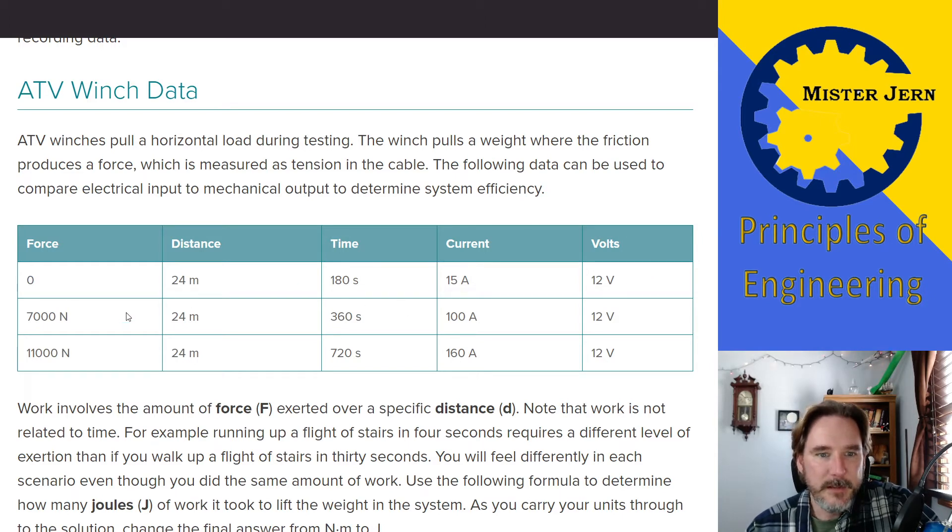In the second test, the amount of force was 7,000 newtons, which is a unit of force, if you remember. For 24 meters, the time was 360 seconds. This was the amount of current used in the winch. And again, the 12 volts.